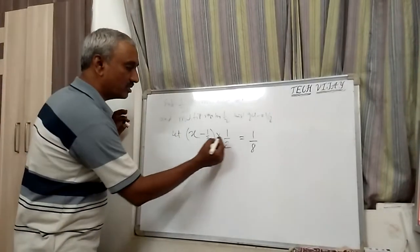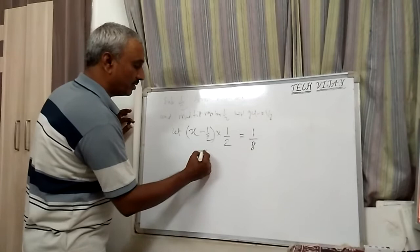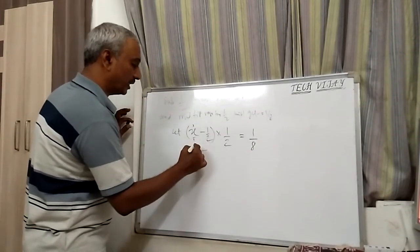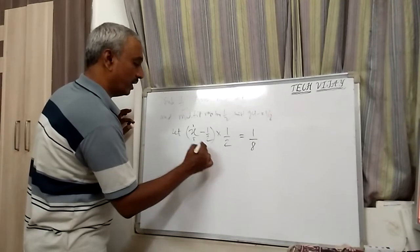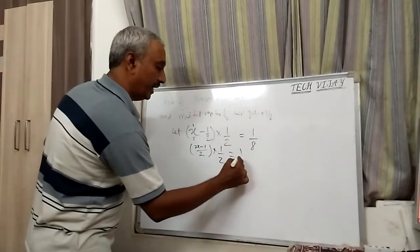So next, we have to solve this one. So x minus 1/2, we can take LCM as 2. So this will be 1, 1 into 2, so 2x. 2x minus 1 divided by 2 into 1/2 is equal to 1/8.